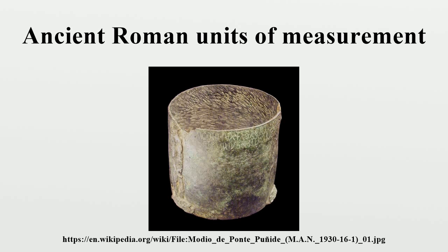The as was further reduced to half an ounce by the 191 BC Lex Papiria. The complicated Roman calendar was replaced by the Julian calendar in 45 BC. In the Julian calendar, an ordinary year is 365 days long and a leap year is 366 days long. Between 45 BC and 1 AD, leap years occurred at irregular intervals. Starting in the year 4 AD, leap years occurred regularly every four years. Year numbers were rarely used.